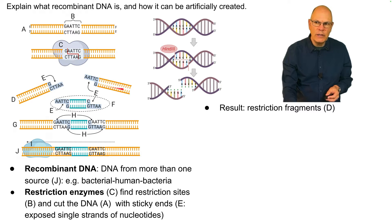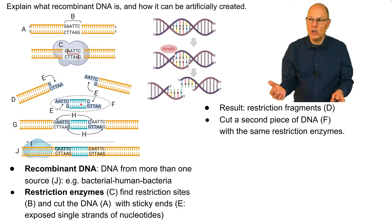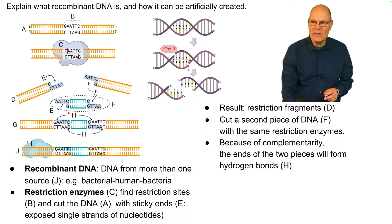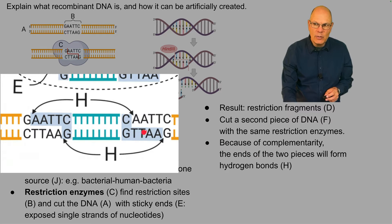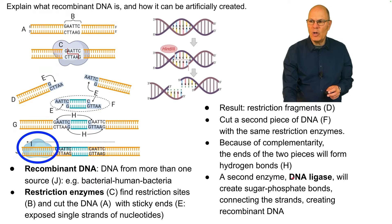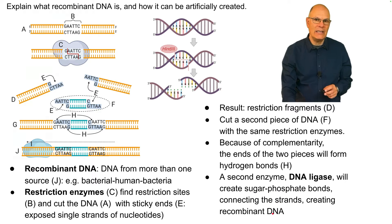The result of using a restriction enzyme is restriction fragments. If you cut a second piece of DNA — for example, a piece of human DNA — with the same restriction enzymes, you'll wind up with complementary sticky ends. Because of complementarity, the ends of the two pieces will form hydrogen bonds. Then you use another enzyme called DNA ligase, which creates sugar phosphate bonds connecting the strands, creating recombinant DNA.